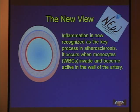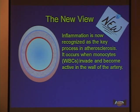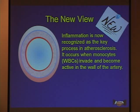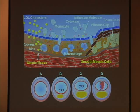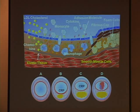The new view is that inflammation is now recognized as the key process in atherosclerosis. It occurs when monocytes — white blood cells — invade and become active in the wall of the artery. LDL cholesterol, in and of itself, is not the problem; it's when it becomes modified, for example through oxidation, that it becomes a danger our immune system recognizes as a threat.